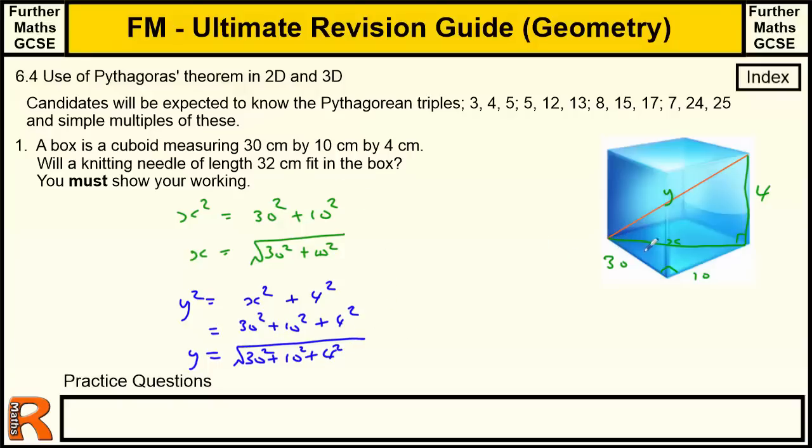Just in two dimensions, you square the two sides, the two short sides to make the diagonal. To make the diagonal in three dimensions, you square all three sides, 30, 10, and 4. And then you square root the sum of those. So we just need to add those up and do the square root of that.